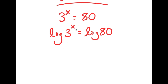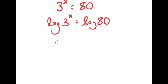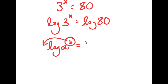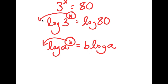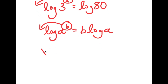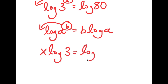We want to find the value of x, and to get x, it's hard to do it when it's in exponent form. So we want to find a way to bring x down to make it a real term. And to do that, there is an important property of logarithms: if there's something in the form log a to the power of b, I can move b to the front. So this is going to equal b times log a. In this case, I have log 3 to the power of x, and I can move x to the front. So now I have x times log 3 is equal to log 80.